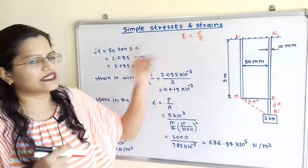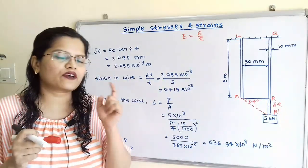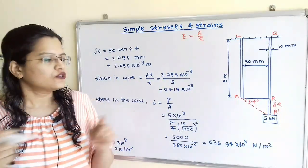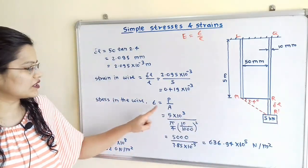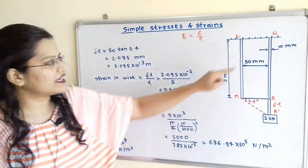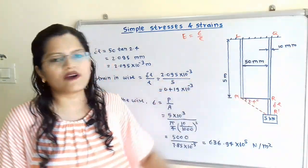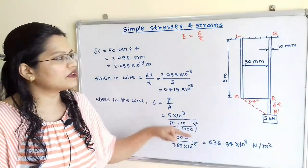Now we will find out stress. So stress is applied force divided by cross-sectional area. So applied force is 5 kN. Standard unit is N, so we will take 5 into 10 raised to 3. And cross-sectional area, so here diameter of the wire is given. So cross-sectional area is pi by 4 d squared.